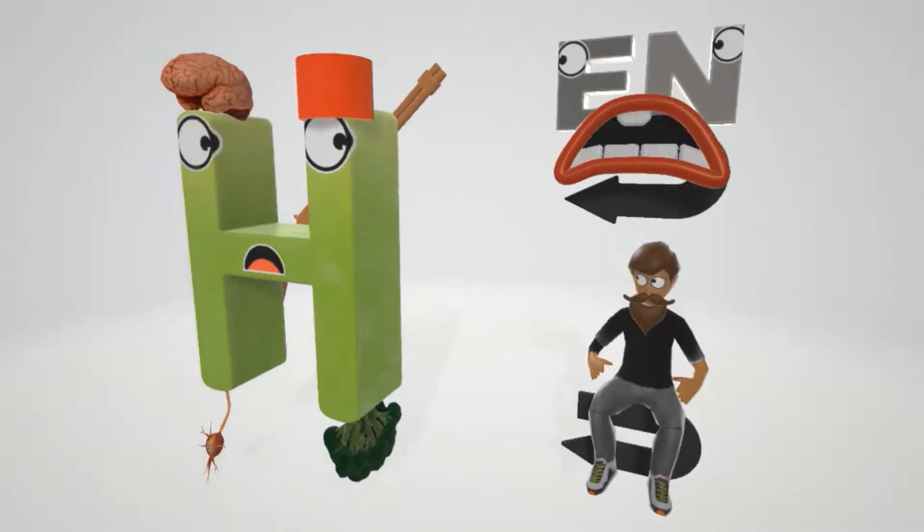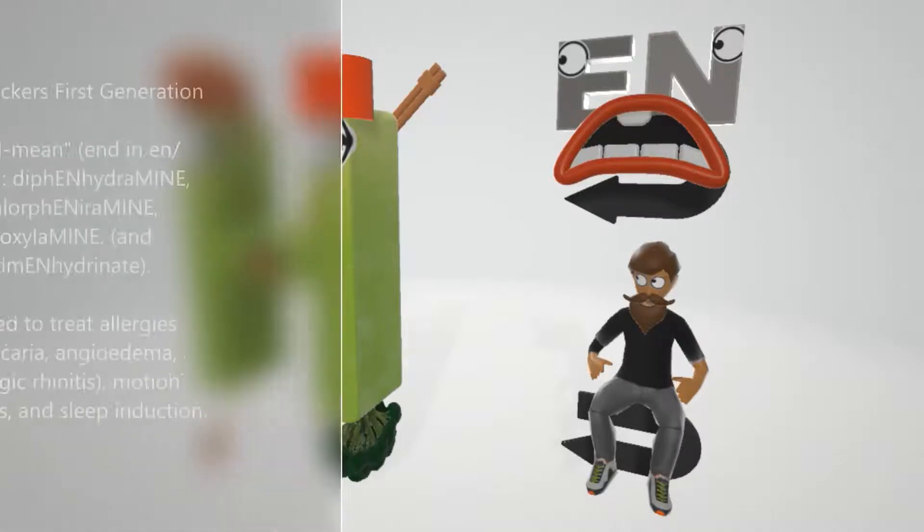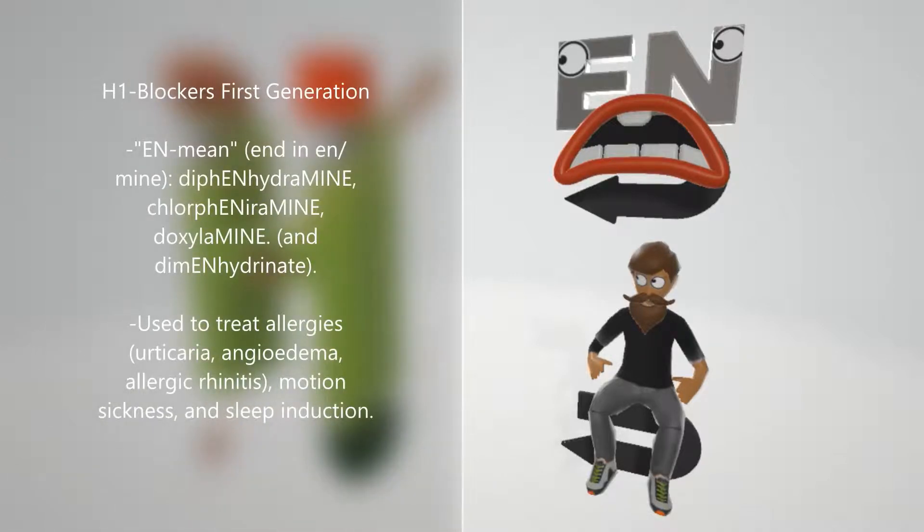Let's talk about first generation. We have N that's mean over here. His name is N. You see the E N and he's mean. This helps remember the N amines: the first generation H1 blockers usually contain N amine in their name. Diphenhydramine, chlorpheniramine, doxylamine. There is another one I didn't mention, and that's dimenhydrinate.